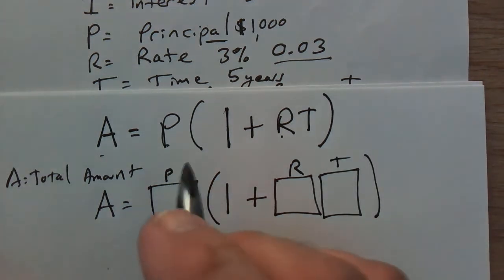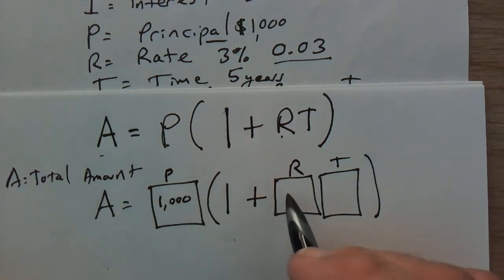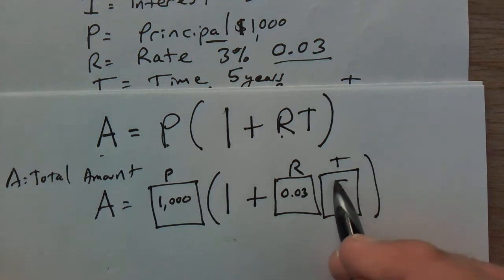Let's fill in the information we know. The principal is $1,000. We know the rate and we're putting it as a decimal 0.03 and our time is still five years.